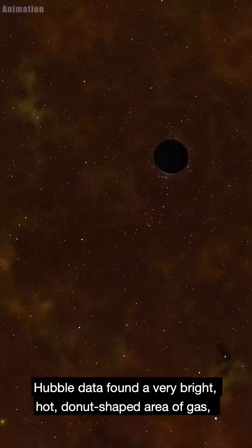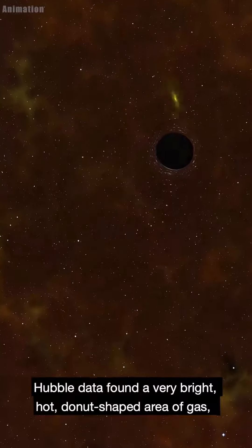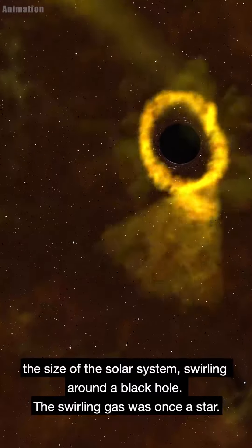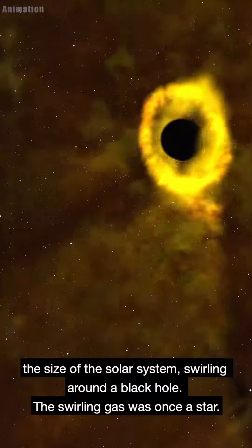Hubble data found a very bright, hot, donut-shaped area of gas the size of the solar system swirling around a black hole. The swirling gas was once a star.